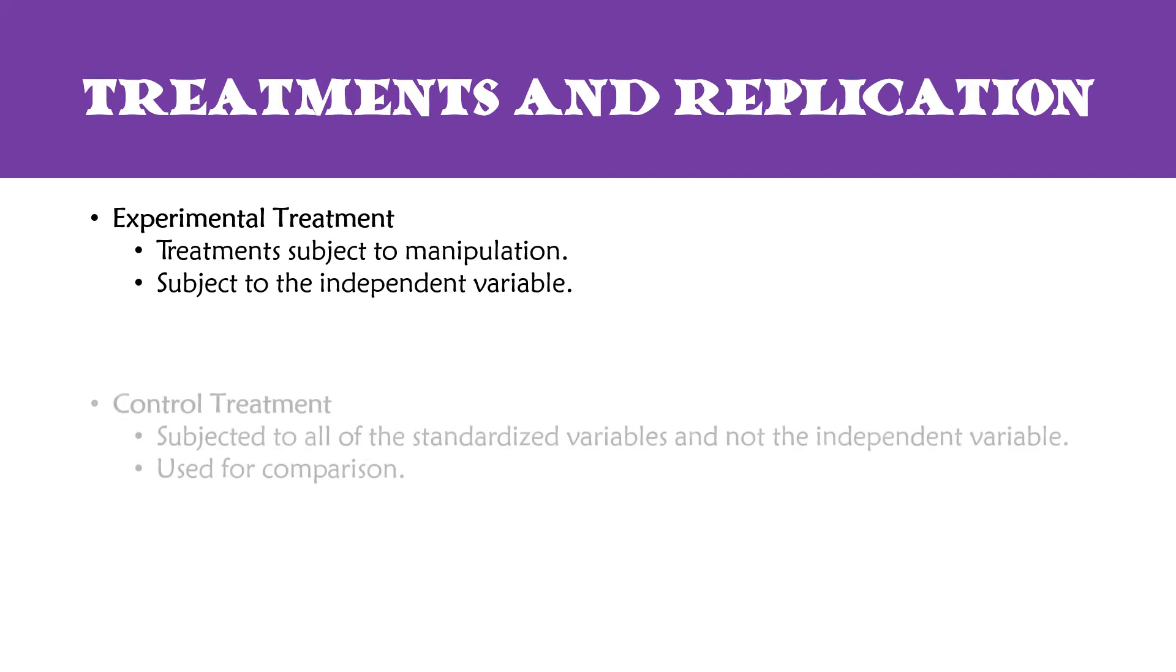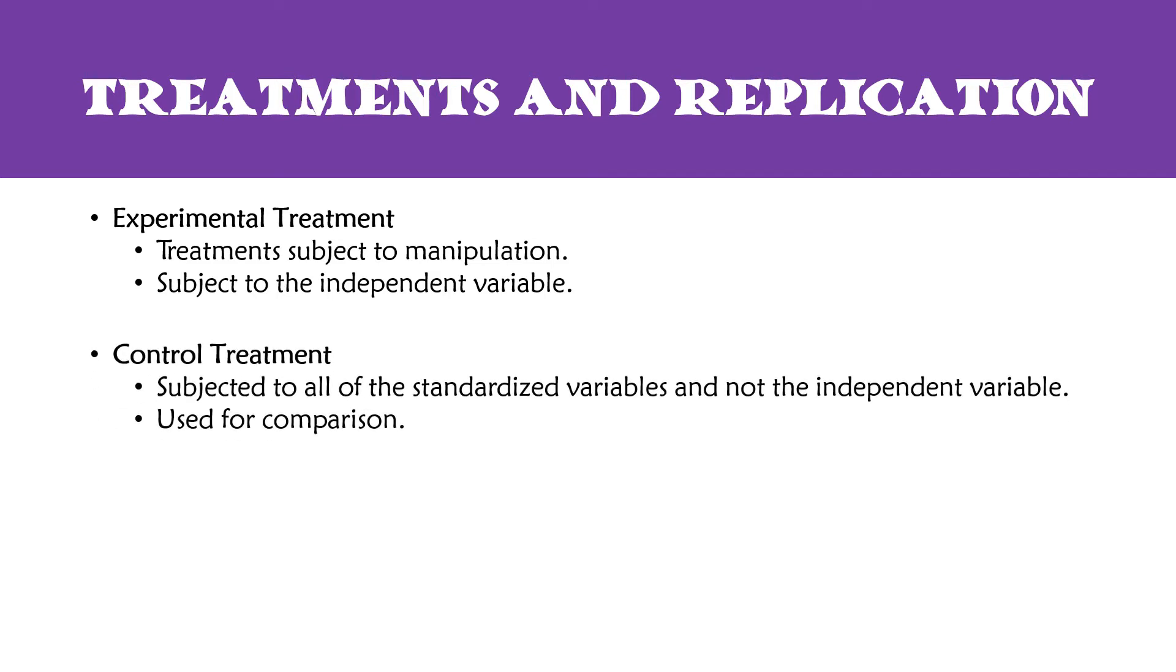And of course, last but not least is treatments and replication. So when you are coming up with an experimental design, not only do you want to determine your variables, so your independent and dependent, but you want to determine your experimental and control groups. The experimental treatment, that's the treatment that's subject to the independent variable. It is subject to manipulation. The control treatment, this is the treatment that's subject to all the control variables and not the independent variable. The control group is generally just used for comparison.